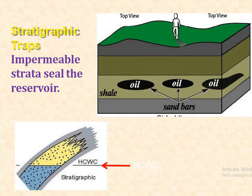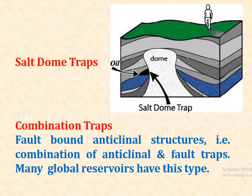The second type is stratigraphic traps, where impermeable strata seal the reservoir. In shale formation, the accumulation of oil takes place. Salt dome traps occur where a salt dome has intruded into the stratigraphic layers, and accumulation of oil takes place around it.